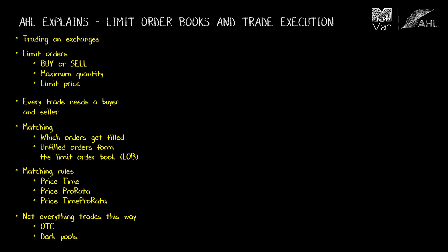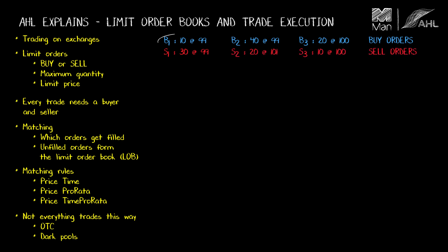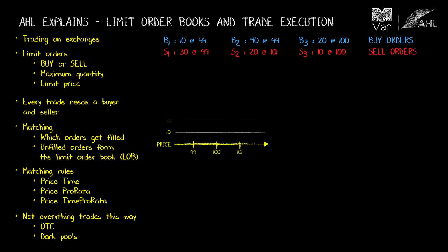Here's a really simple illustration to show how a price-time limit order book operates. We'll have three buy orders and three sell orders. B1 is an order to buy up to 10 shares for a maximum price of 99, and S2 for example is an order to sell up to 20 shares for a minimum price of 101. We need to know the order in which these buys and sells arrive in order to construct the limit order book, so here's a worked example.